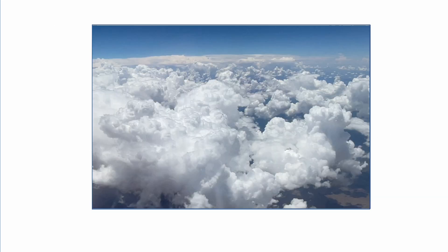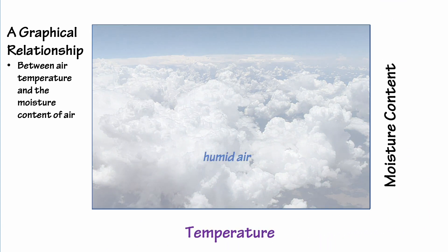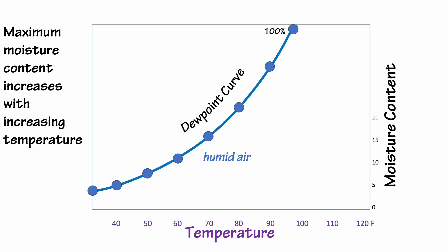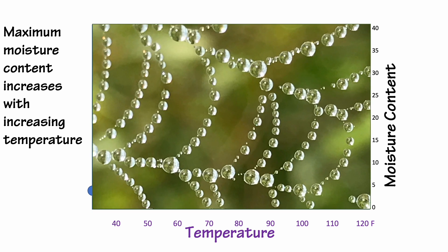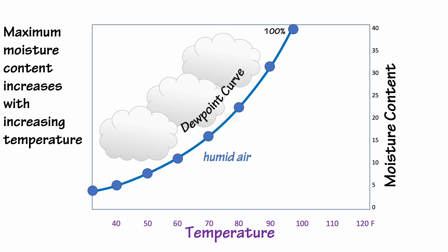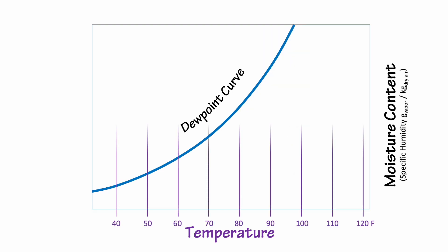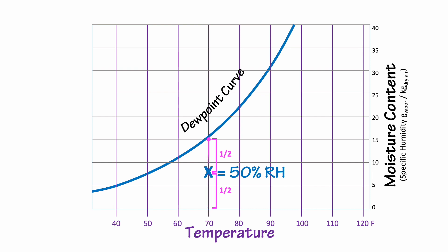Now let's think about water vapor in the air. We'll make a similar graph, this time with temperature on the horizontal axis and moisture content on the vertical axis. The dew point curve maps the combinations of temperature and moisture where the air is 100% saturated with water vapor. At the dew point, water vapor condenses to liquid — we might see that as clouds, fog, rain, or dew. Notice that as the temperature increases, the maximum possible moisture content of the air also increases. Most of the time, the air around us is going to be underneath the curve, where water vapor in the atmosphere is less than its maximum. We can also map out the places where the air has less than the maximum moisture content.